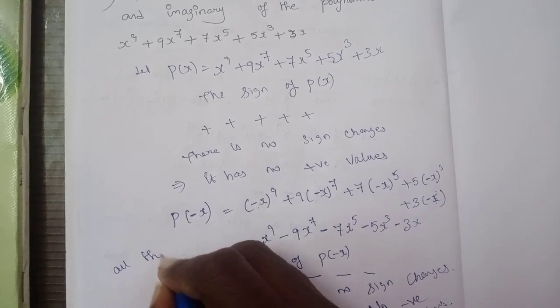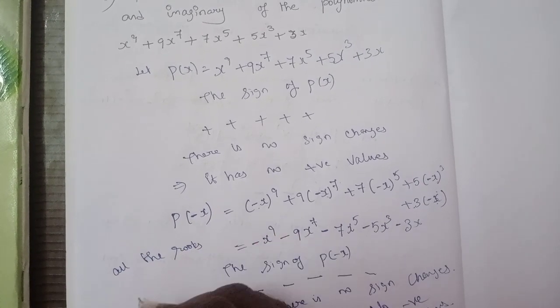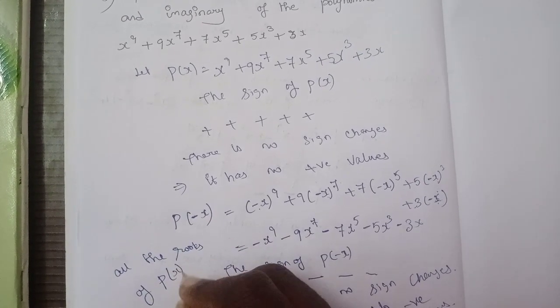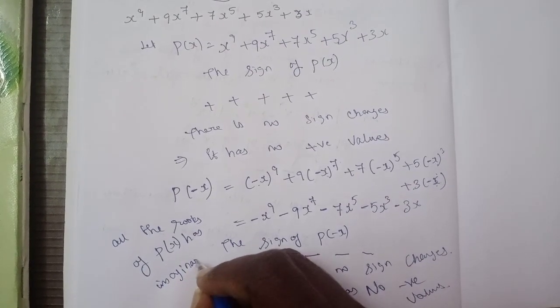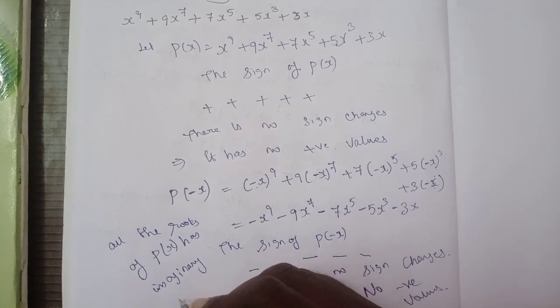So all the roots of P(x) are imaginary, because 9 roots of imaginary roots are there.